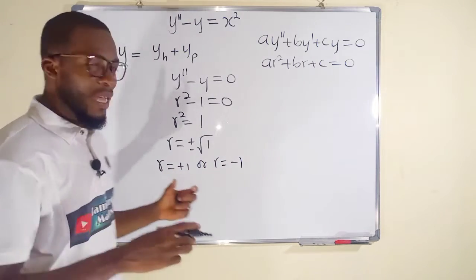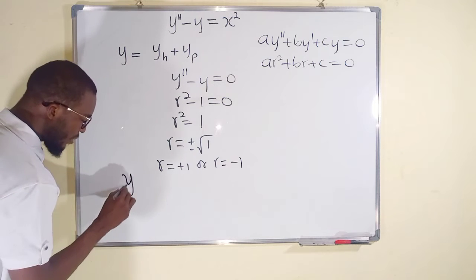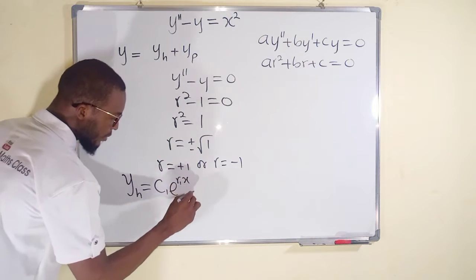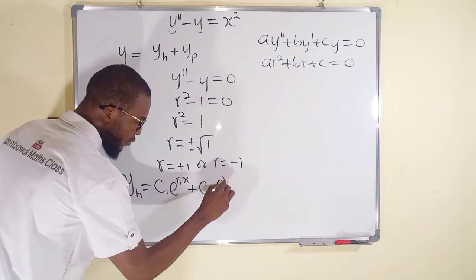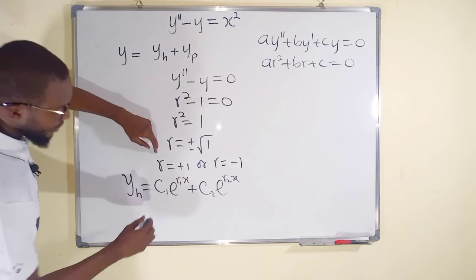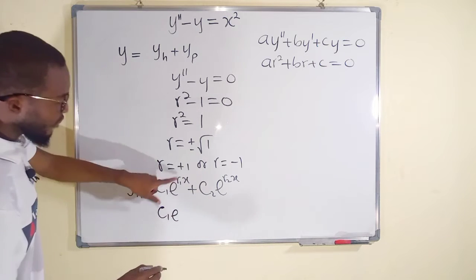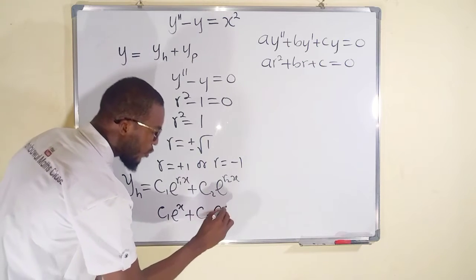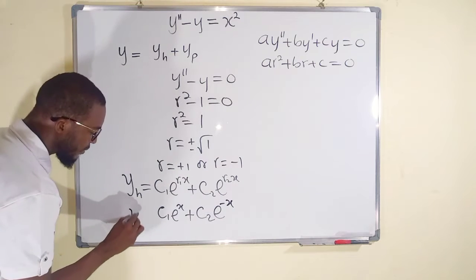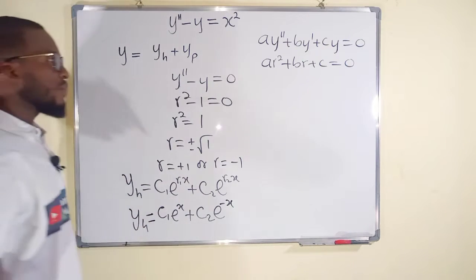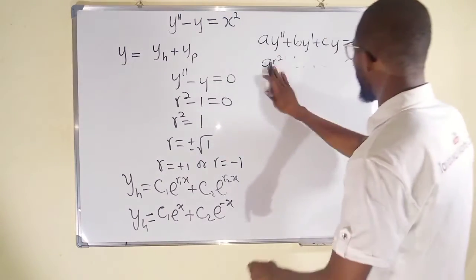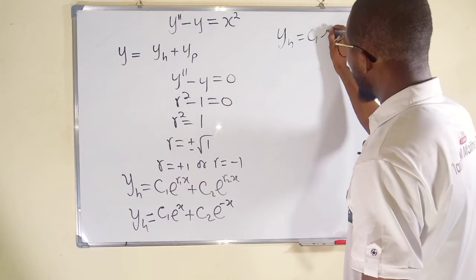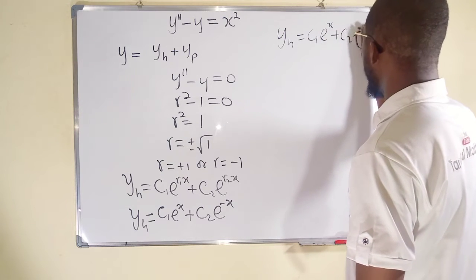We have real and distinct roots. Therefore, the general solution will be of this form: a constant times e to the first root times x, plus another constant times e to the second root times x. So y sub h equals c1 e to the x plus c2 e to the negative x. This is the general solution to the homogeneous differential equation, and we save this for future use.